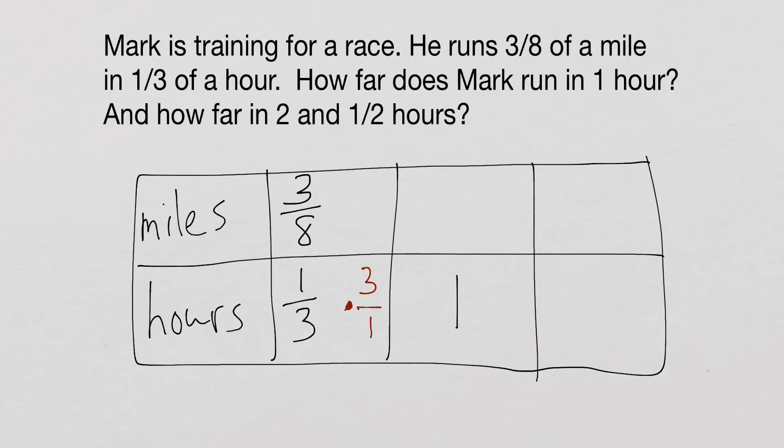Remember, we keep change flip when we divide by fractions. So what we're going to be doing is we're actually going to be doing one-third times three over one, which actually gives us three over three, which is, of course, equal to one.